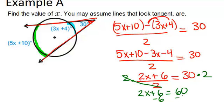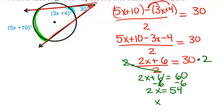and I can keep solving this, and I get 2x equals 54, which means that x equals 27.